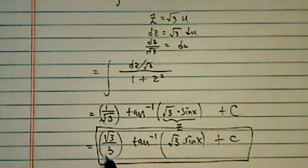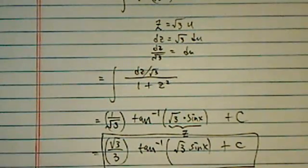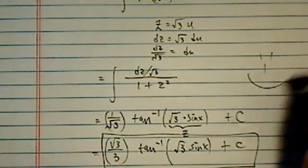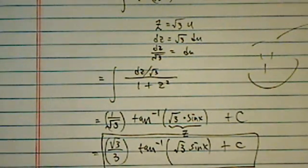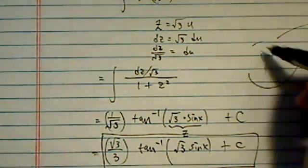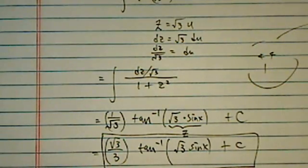So here's our final answer: radical 3 over 3 tangent inverse of radical 3 sine x plus c. That's how we handle this integral. Once again, from Tucson, Arizona, this is Dr. Pan making learning math fun, at least trying to make it fun. If the video has been helpful, I would appreciate a thumb up or a comment. Until next time, have a confident day.